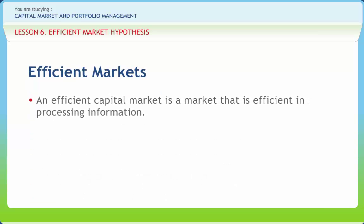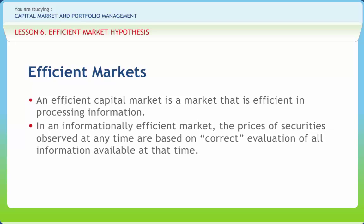An efficient capital market is a market that is efficient in processing information. We are talking about an informationally efficient market as opposed to a transactionally efficient market. In other words, the market quickly and correctly adjusts to new information. In an informationally efficient market, the prices of securities observed at any time are based on correct evaluation of all information available at that time.